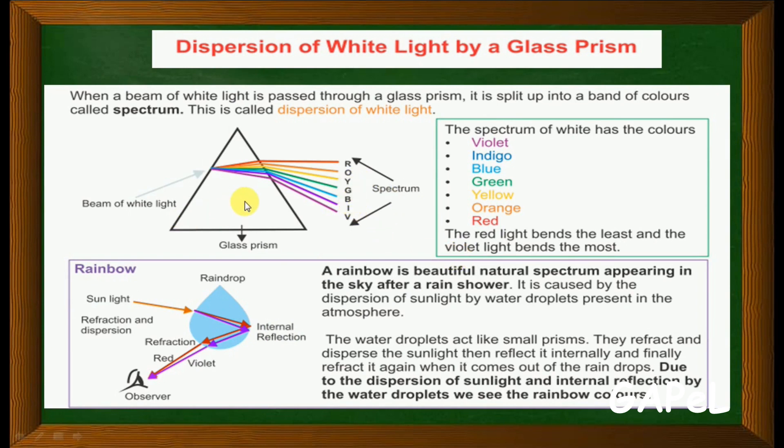Through the prism you get seven different colors like a rainbow. That is the specialty of a glass prism. Dispersion of white light by a glass prism.